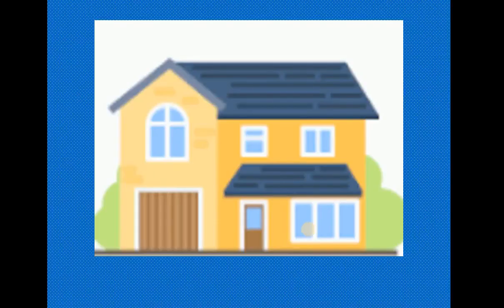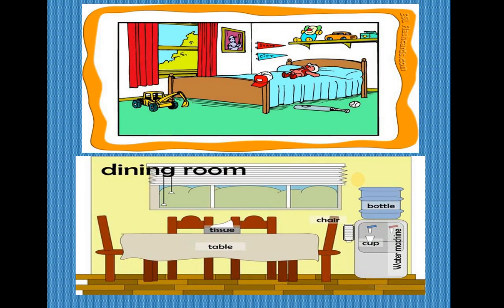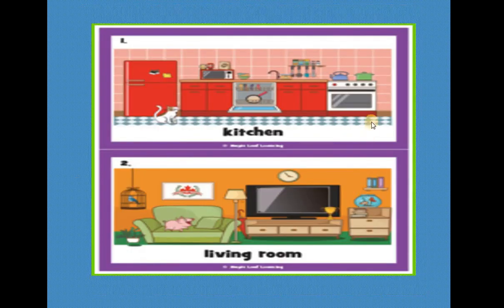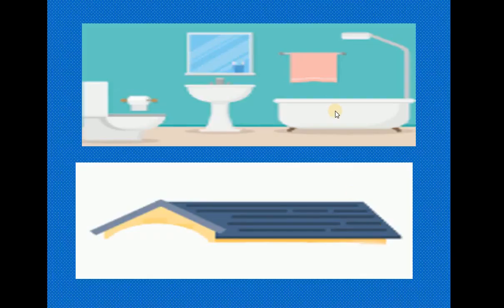Proceed by showing a picture of a house and have the students name the rooms. Then move on to show pictures of different rooms in the house and ask students what things they can find in each room — in the bedroom, dining room, kitchen, living room, bathroom and toilet.